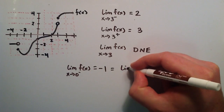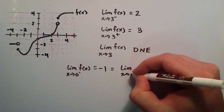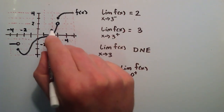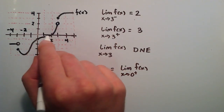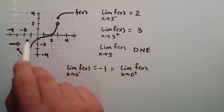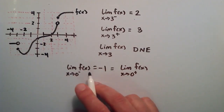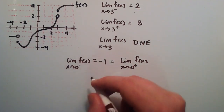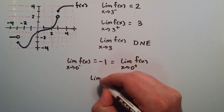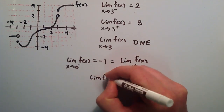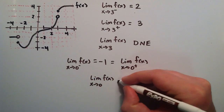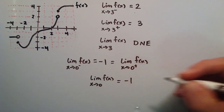It turns out that if we approach from the right-hand side — x approaches 0 from the right of f of x — approaching from the right, we end up with the same value. It looks like f of 0 is going to give us the value negative 1 as well. Because the left-hand and right-hand limits agree as x approaches 0, the limit of f of x as x approaches 0 exists and it is negative 1.